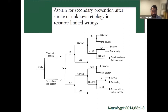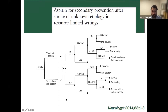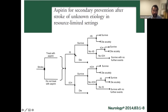Each node in the decision analysis framework gets a probability, and those probabilities come from the literature. I used a software package called TreeAge — a play on the word 'triage' with 'tree' at the front. It's very user-friendly; you don't have to know how to program. You just draw out this decision tree in a user-friendly interface and then plug in your transition probabilities.